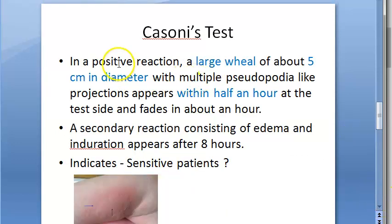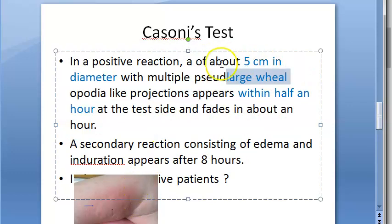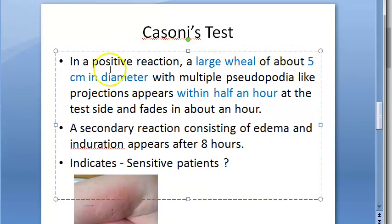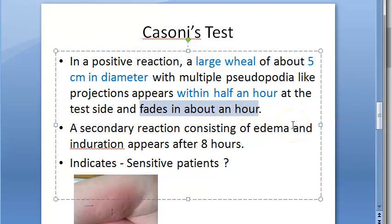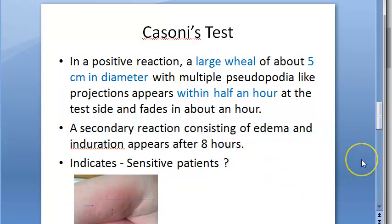A positive reaction means the patient is sensitive to hydatid disease. A large wheal of about 5 centimeters in diameter will develop with pseudopodia-like projections, appearing within half an hour — because this is a type 1 immediate sensitivity reaction. It fades within about an hour. A secondary reaction consisting of edema and induration can occur after eight hours.